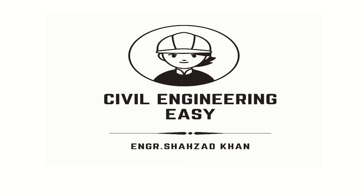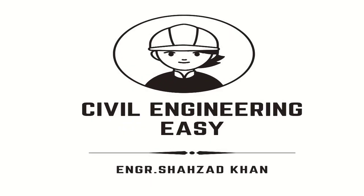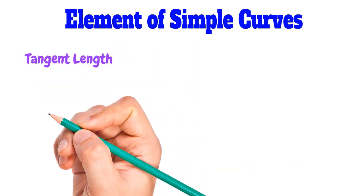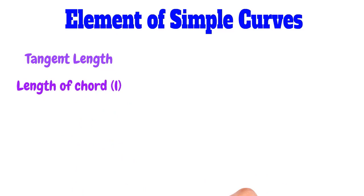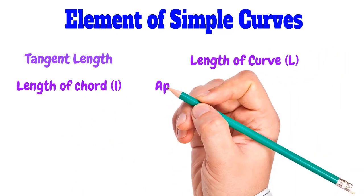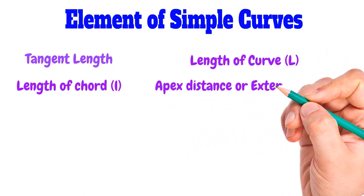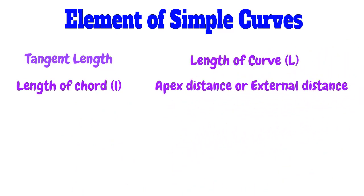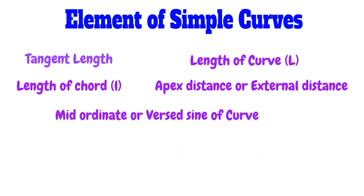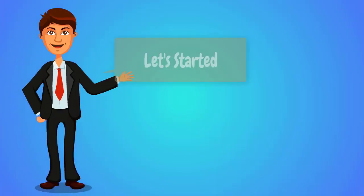Welcome back to the civil engineering YouTube channel. Today I will discuss different elements of a simple curve along with their derivations, including tangent length, length of curve, apex distance or external distance, and mid-ordinate or versed sine of the curve. Let's get started.